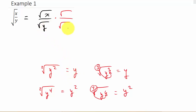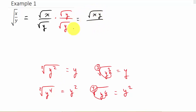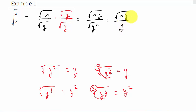So if I multiply y times y, well y times y is y squared and the square root of y squared is y. This gives me the square root of xy over the square root of y squared, which is the square root of xy over y.